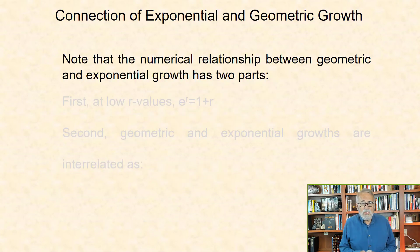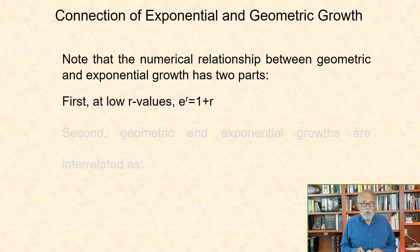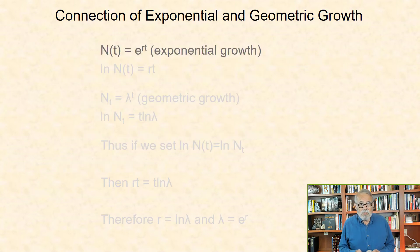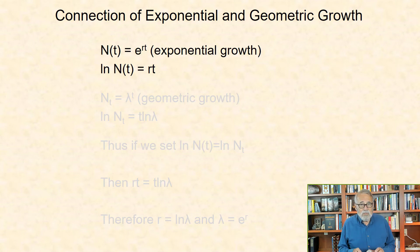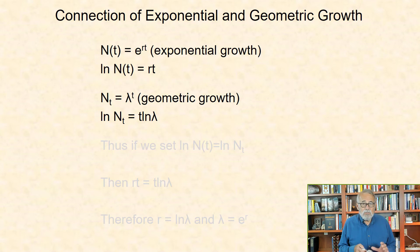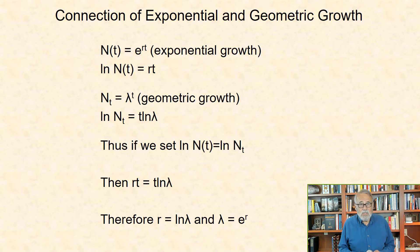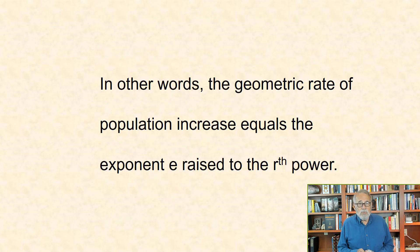Note the numerical relationship between geometric and exponential growth has two parts. First, at low r values, e to the r equals 1 plus r. Second, geometric and exponential growths are interrelated: number at time t equal e to the rt (exponential growth), then ln nt equal rt; number at time t equal lambda raised to the t-th power (geometric growth), so ln nt equal t ln lambda. Thus ln nt equal ln nt — the first in continuous time, the second in discrete time — then rt equal t ln lambda, therefore r equal ln lambda and lambda equal e to the r. In other words, the geometric rate of population increase equals the exponent e raised to the r-th power.